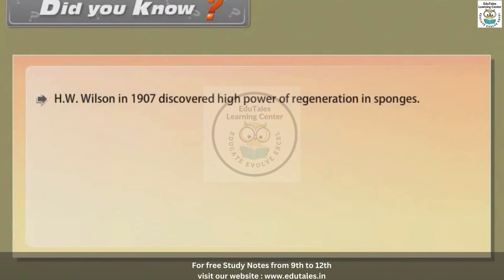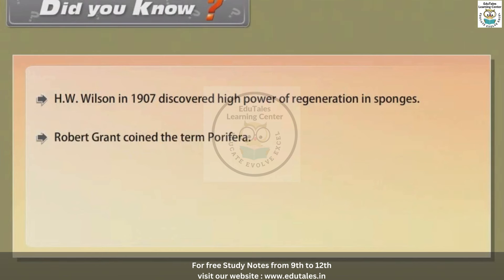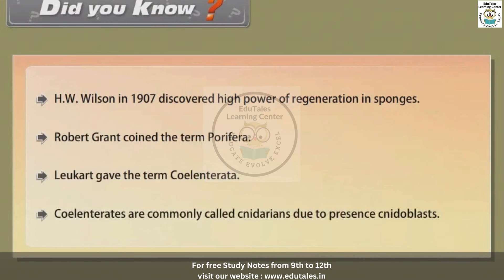Did you know? H.W. Wilson in 1907 discovered high power of regeneration in sponges. Robert Grant coined the term Porifera. Leuckart gave the term Coelenterata. Coelenterates are commonly called Cnidarians due to the presence of cnidoblasts.